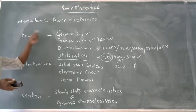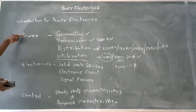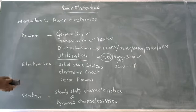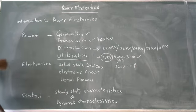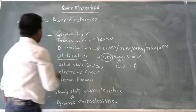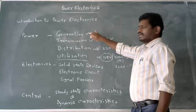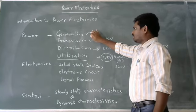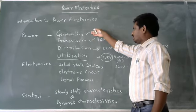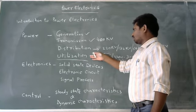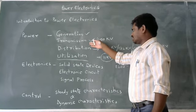The power electronics is associated with three terms: power, electronics, and control. Basically, the power electronics deals with electric power. Electric power must be generated first. Whatever power generated has to be utilized by different loads through transmission and distribution.